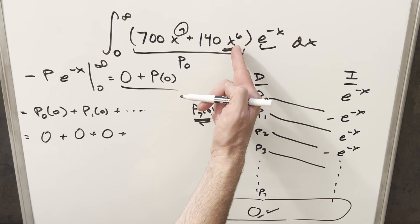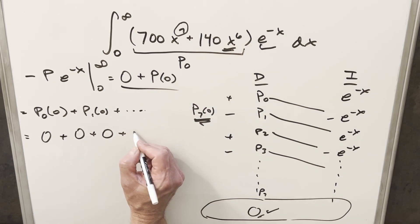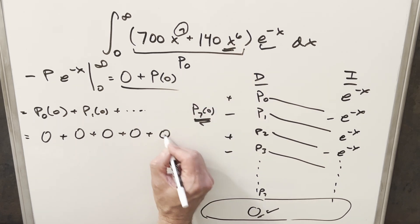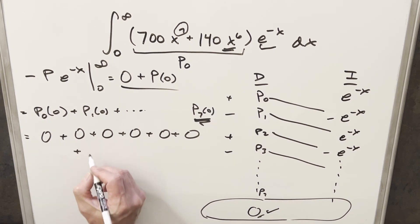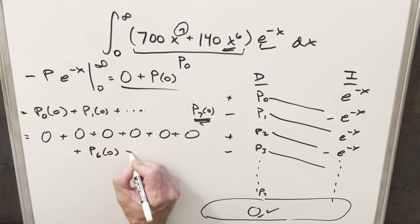Even at the 5th derivative, this is still going to have an x in it. So we're going to end up with, I think, 6 terms that are just zeroed out. And so with these terms all zeroed out, all that we're going to be left with is evaluating just P₆(0), and then this last one, P₇(0).